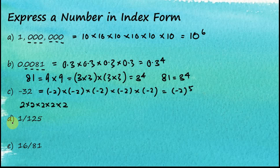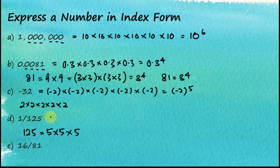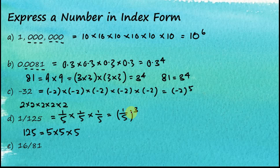Example D: 1 over 125. You should be able to tell that 125 is equal to 5 times 5 times 5. Therefore 1 over 125 is equal to 1 over 5 times 1 over 5 times 1 over 5, which equals (1/5) to the power of 3. You can also write this as 1 over 5 to the power of 3.